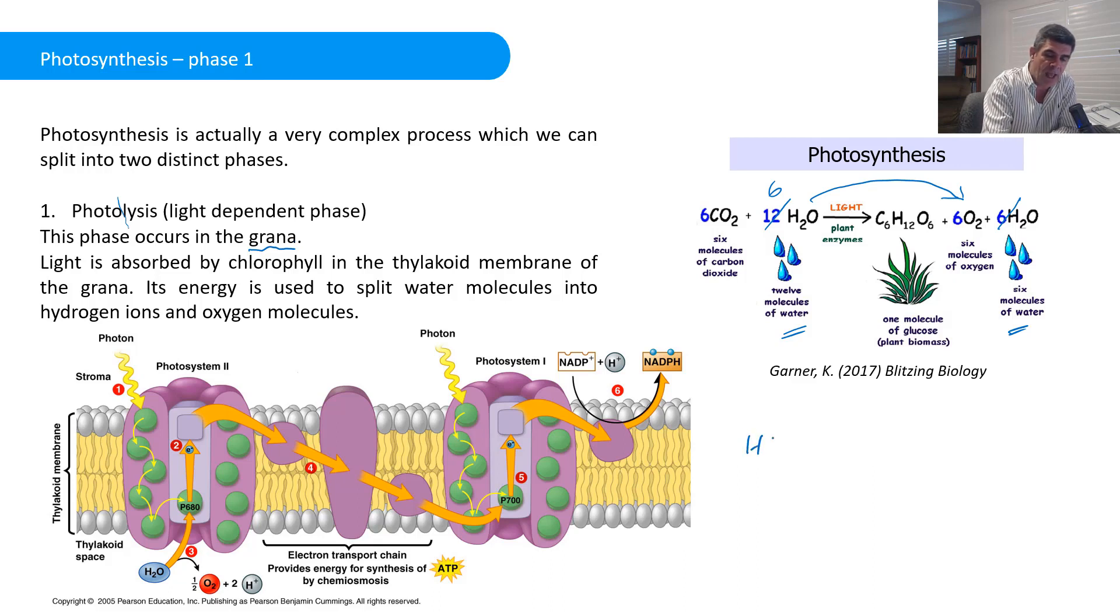This is a process that occurs in the light that allows water molecules to actually be broken down into hydrogen and oxygen gas. This occurs in the grana of the chloroplasts and specifically in the little stacks of thylakoid membranes that contain chlorophyll. It's the chlorophyll that absorbs that energy, that takes in the light energy, and it uses that energy to split the water molecules into hydrogen ions and oxygen molecules. That is the source of the oxygen that's released in photosynthesis.